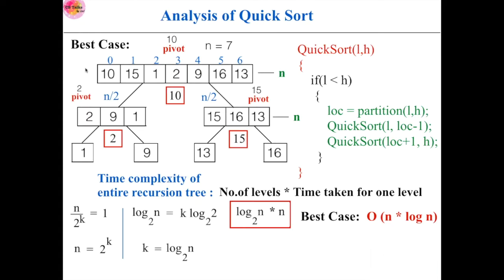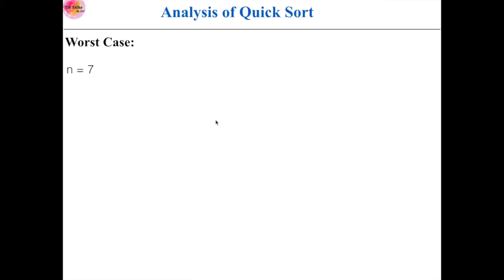We have log n levels and time taken for one level is n, so the best case is n × log n. We can achieve this best case only when partitions are done as evenly as possible — that is, in each level both left and right sub-arrays should contain almost the same number of elements, n/2 each. In this situation only can we achieve the best case. So the time complexity depends on how we select the pivot element.